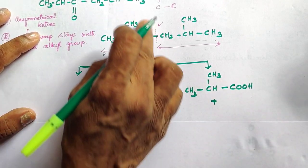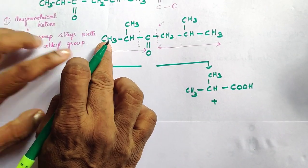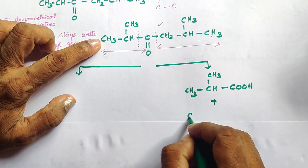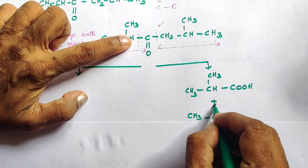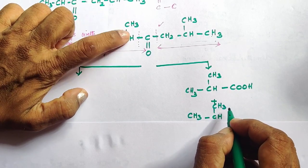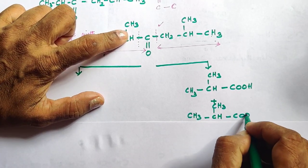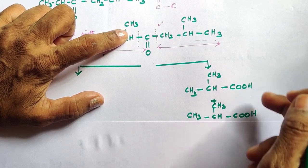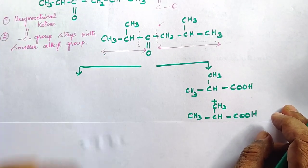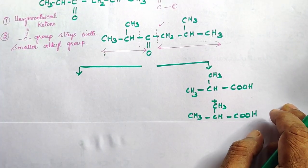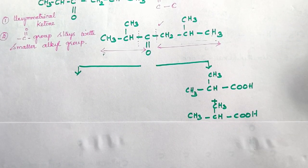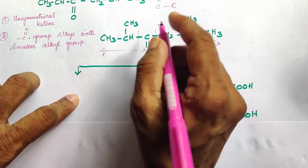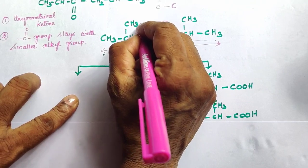From cleavage B, we get COOH on both sides. Looking at both fragments: CH3-CH(CH3)-COOH appears from one side, and COOH appears from the other side. These are the same product — they are both the same. So two molecules of this acid form from cleavage B.